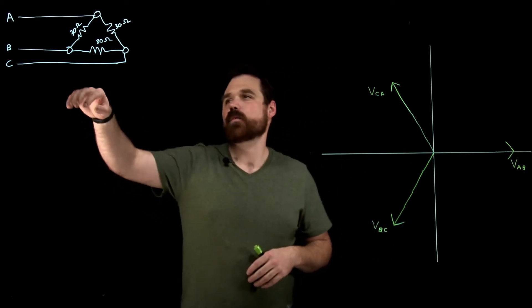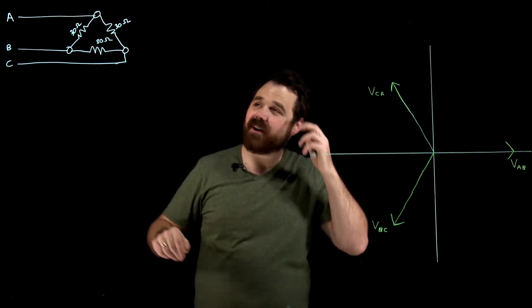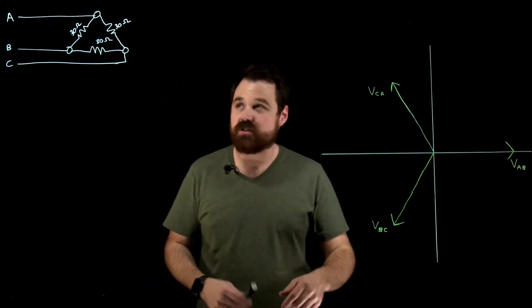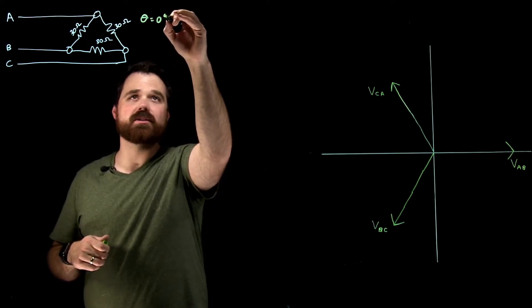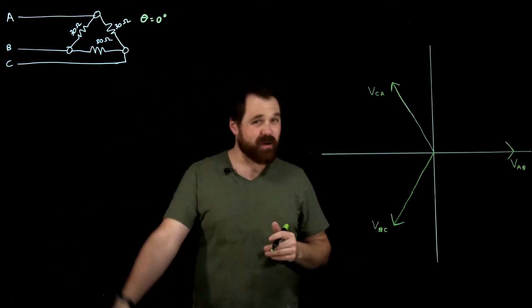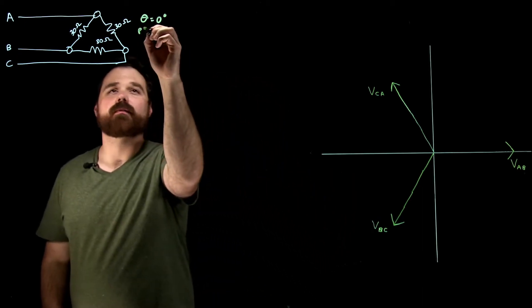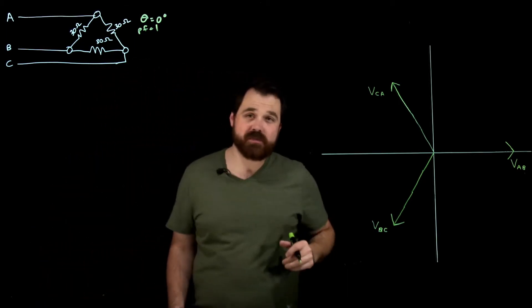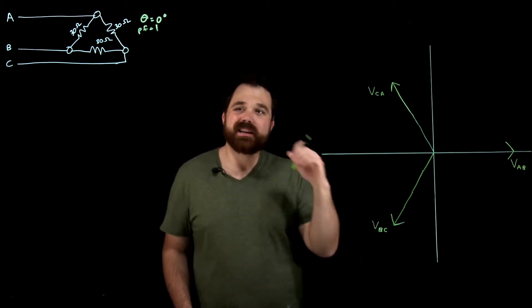What we have here are three resistors connected in a delta configuration, each of them being 30 ohms. With resistors, our phase angle is zero degrees and they have a power factor of one. Now because they're all 30 ohms, that means our Z or our impedance is also equal in each phase.